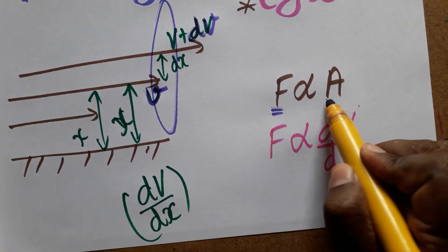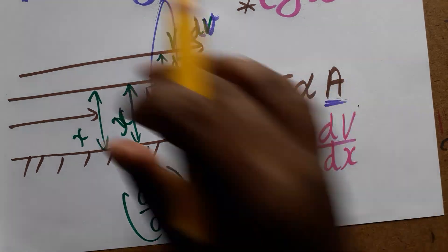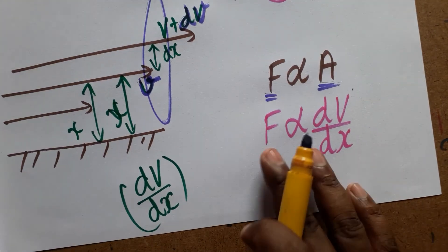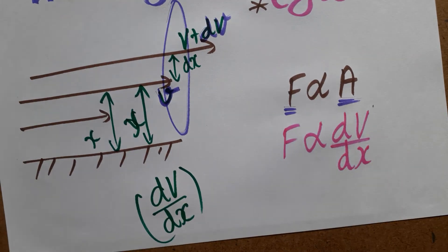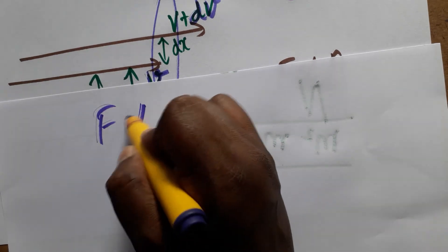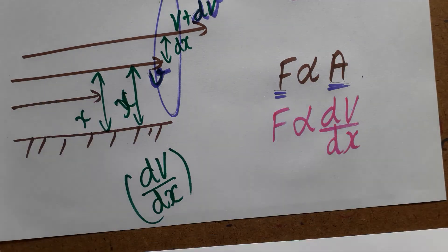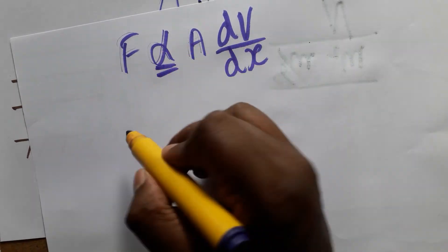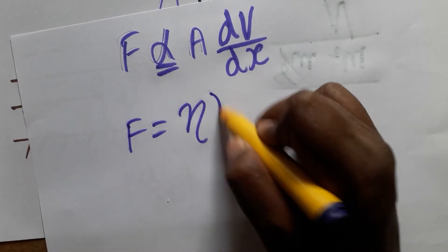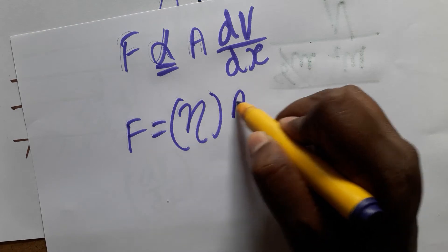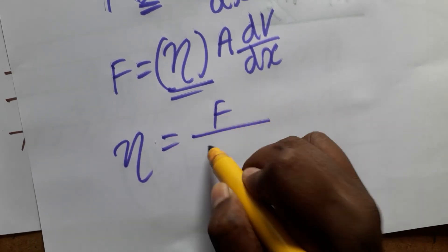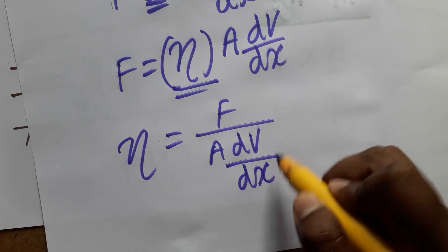The frictional force is directly proportional to the area of liquid flow and also directly proportional to the velocity gradient — that is, the change in velocity with respect to distance DV/DX. Removing the proportionality, we include a constant called the coefficient of viscosity, symbol Eta. So the formula is: Eta equals F divided by A times (DV/DX).